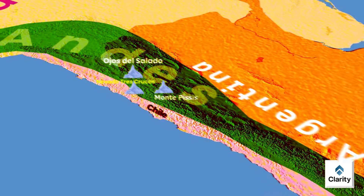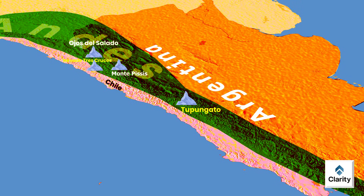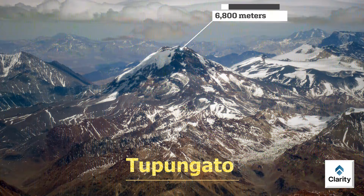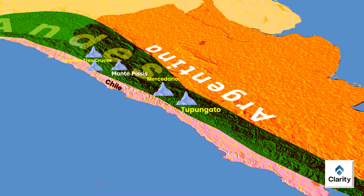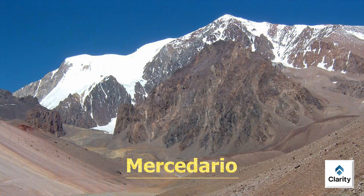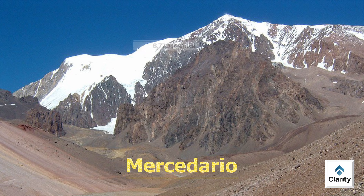Another important peak is Tupungato, lying on the border between Chile and Argentina, reaching roughly 6,800 meters. It is volcanic but not active, and its slopes feature significant glacier cover. Further north, we find Mercedario, fully located within Argentina, rising to 6,770 meters. Unlike the other peaks mentioned, Mercedario is not volcanic — it is purely a mountain formed by the uplift of the Andes.